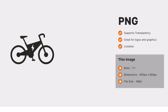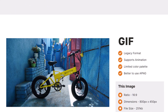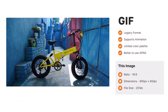Then we have PNGs. This is a file type that supports transparency, and so this format is best for icons, flat colored graphics, and logos, or other images where you want a transparent background. They are typically larger than JPEGs but can still be quite small. They are not so suitable for large photographs as their file size would be quite large.